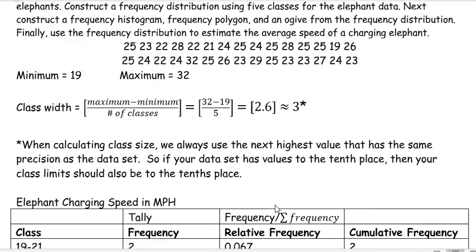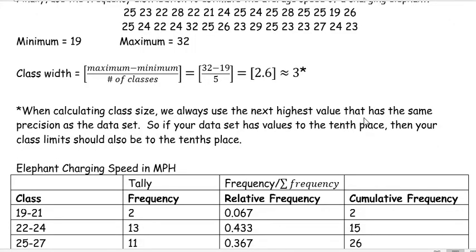If your data set went to the tenths place, you would round up to the next tenths place, always having your class width making sense with your data. So that means I'm going to start with my minimum of 19, and I'm going to have a class width of three.